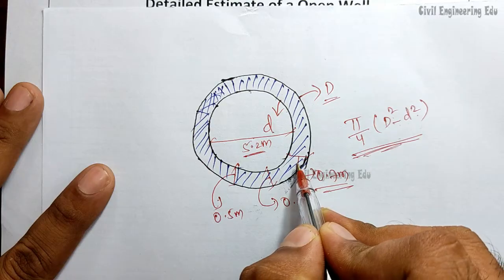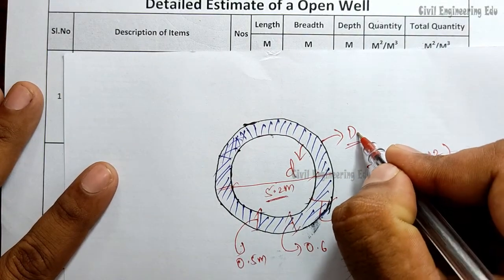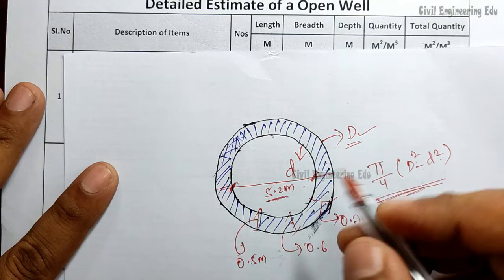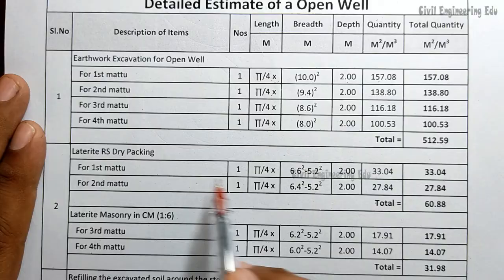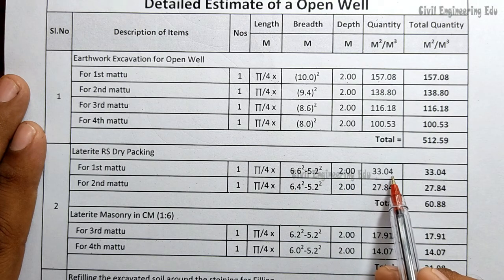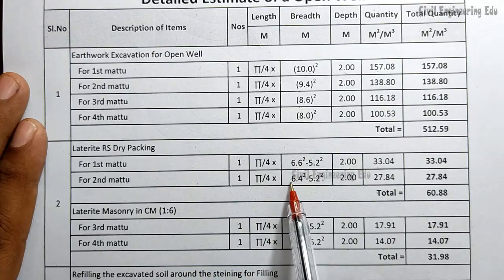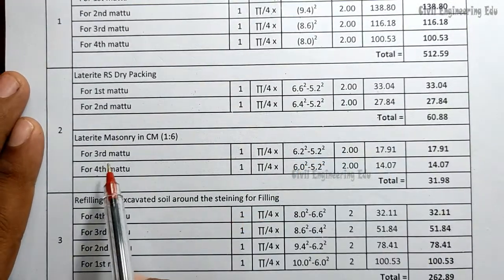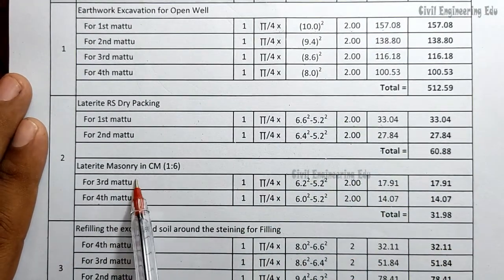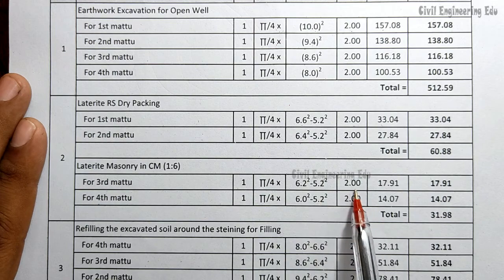For Step 1, the wall width is 0.7 meters, so the outer diameter D = 5.2 + 0.7 + 0.7 = 6.6 meters. The inner diameter d remains 5.2 meters. Quantity = π/4 × (6.6² − 5.2²) × depth = 33.04 m³. The same formula applies for Steps 2, 3, and 4, where the wall widths are 0.6 m, 0.5 m, and so on. Steps 3 and 4 use laterite masonry in cement mortar 1:6.